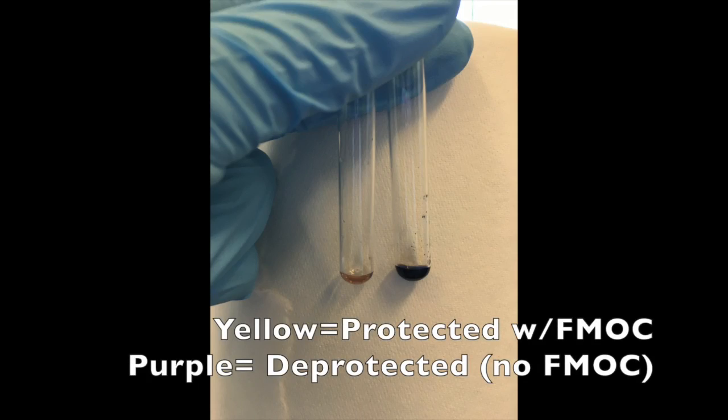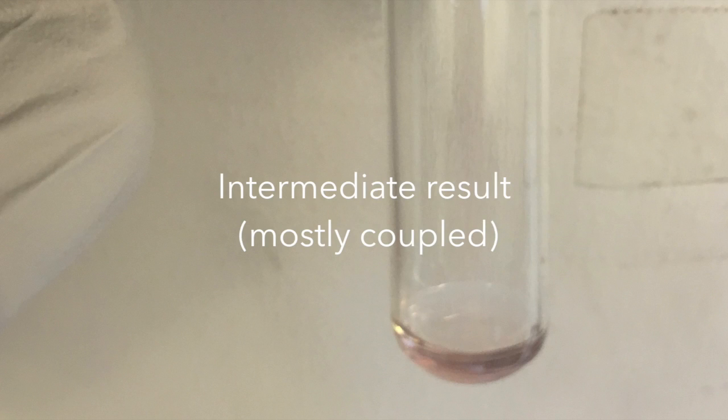If the amino acid attached to the resin has the FMOC group, then it is protected and the test will turn yellow, but if the FMOC group is not present, the resin is deprotected and the solution will turn purple. A pink intermediate result occurs when the resin is coupled but still partially deprotected.